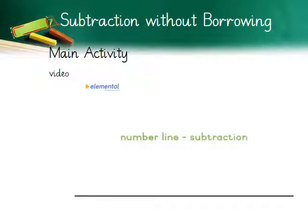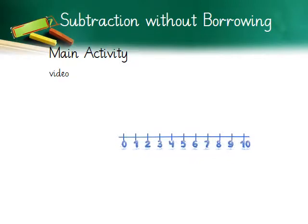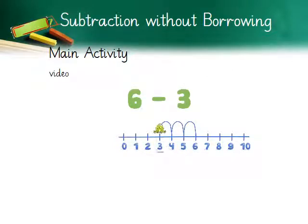Now comes the video time — watch the relevant video and note down all the main points, relating them to the discussions done so far. In the video: 6 minus 3 — the frog starts at 6 and moves 3 places to the left, landing on 3. So 6 minus 3 equals 3.